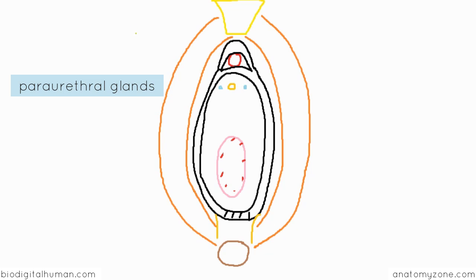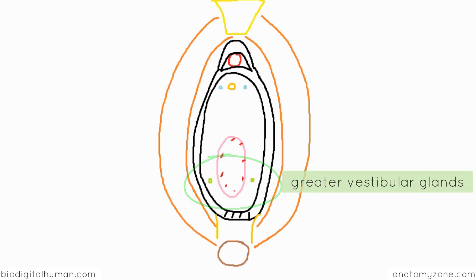And then slightly posteriorly and laterally to the vaginal orifice, you've got two glands which open called the greater vestibular glands. These glands are also called Bartholin's glands and they secrete mucus to lubricate the vagina.